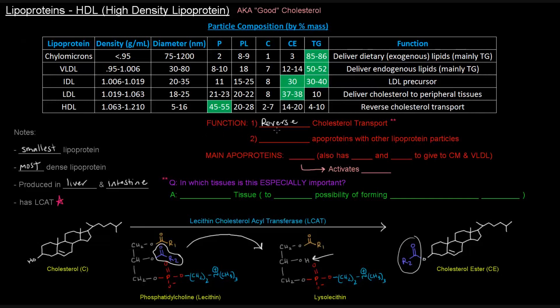Another thing that HDL is important for is that it exchanges apoproteins with other lipoprotein particles. So its main apoprotein is A1, and that's because it activates LCAT, which we mentioned earlier. So that's super important. Also, it has C2 as well as E, and it gives those to chylomicrons and also gives them to VLDLs, as we saw in the other videos.